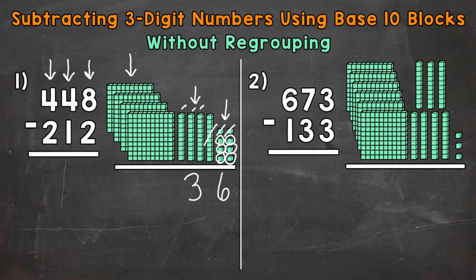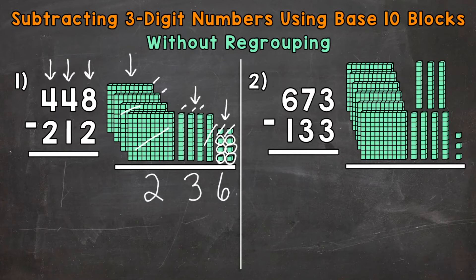Then we move to the hundreds. We have 4 hundreds, which has a value of 400, minus 2 hundreds, which has a value of 200. So let's subtract or take away 2 hundreds: 1 and then the one behind it, 2. How many do we have left? We have this one and this one — so 1, 2 hundreds left. So we put a 2 in the hundreds place in our answer. Our final answer is 236.